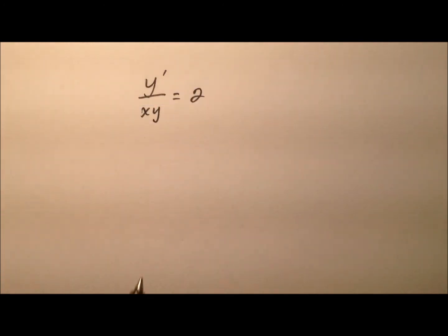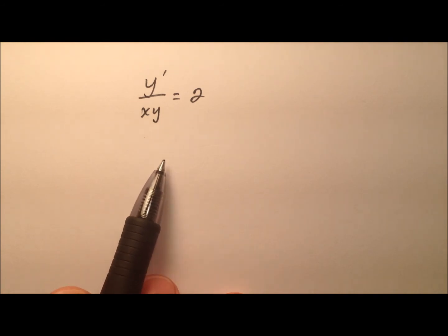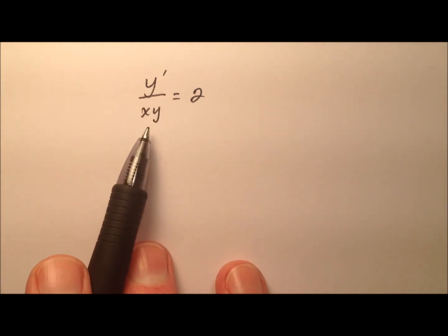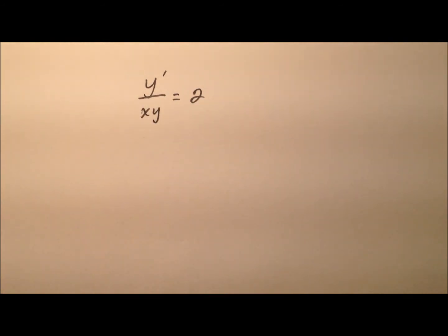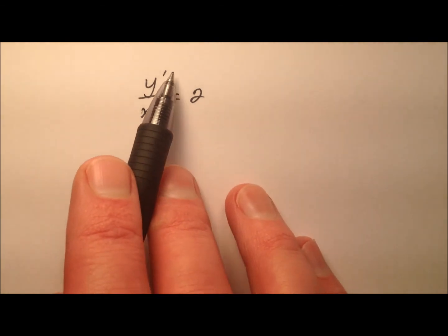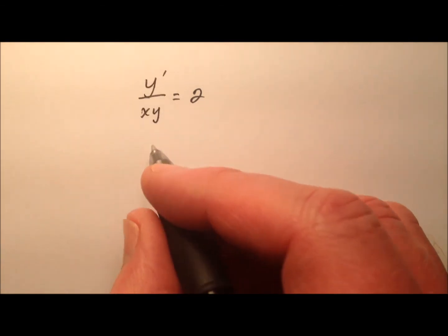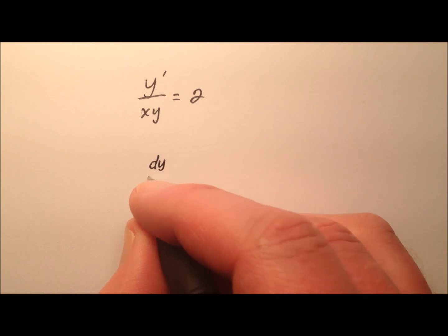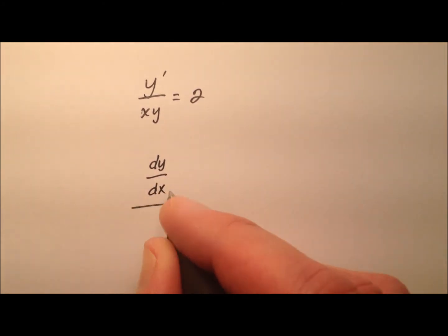In this second example, we have another separable differential equation. We have y' being divided by xy and that equals 2. So probably the best thing we can do to start is to get this y' into dy/dx. And that'll kind of help us determine where things need to go.